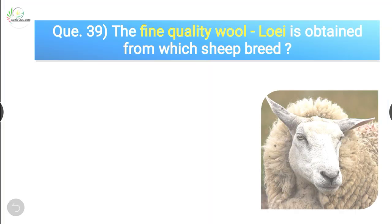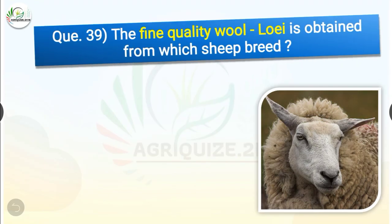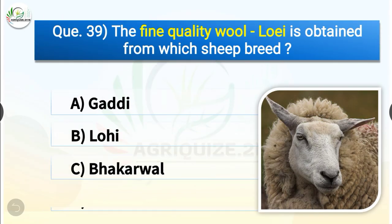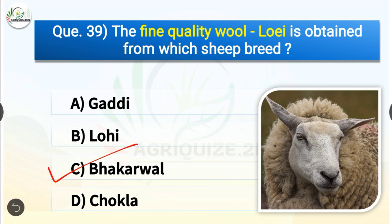Question number 39. The fine quality wool Lohi is obtained from which sheep breed? The options are Gaddi, Lohi, Bhakarwal or Chokhla. The correct answer is option C, Bhakarwal. So the fine quality wool Lohi is obtained from Bhakarwal sheep breed.